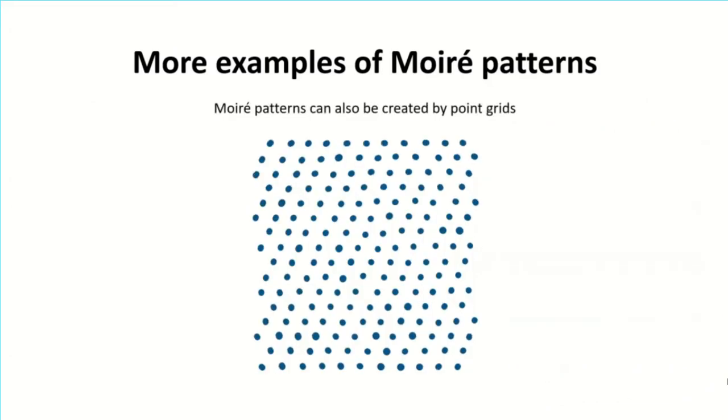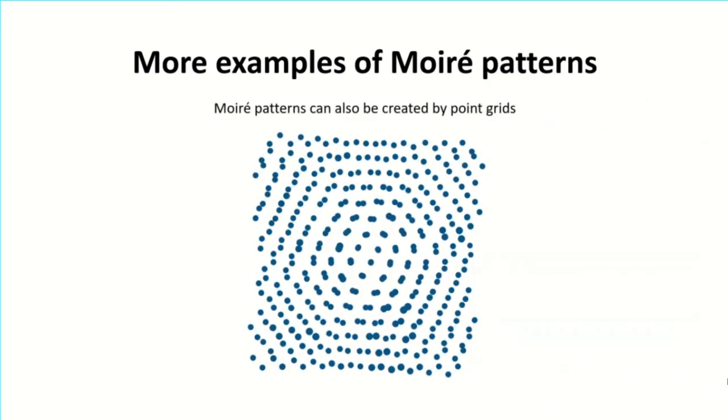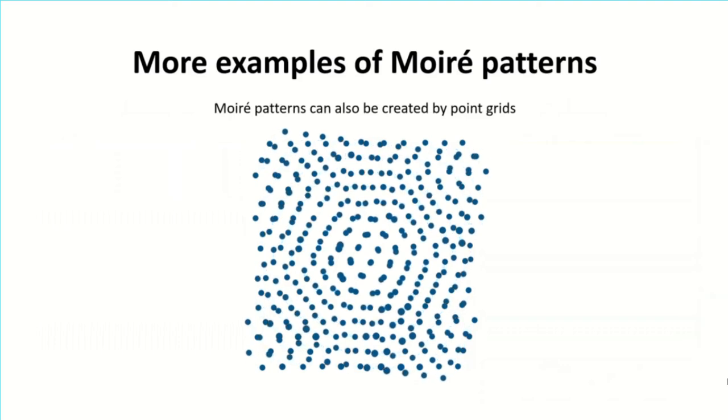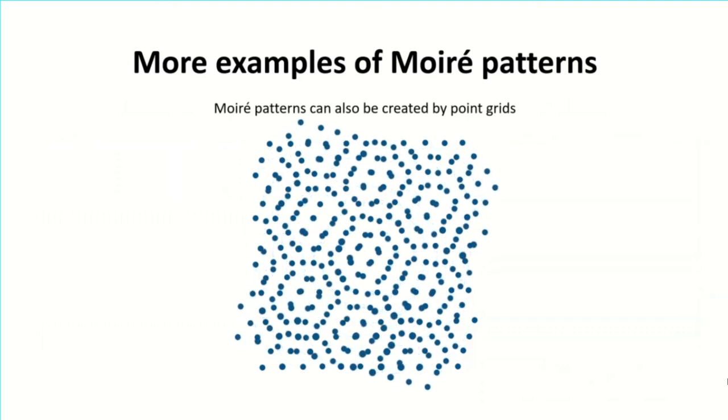And just like the set of lines creating moiré, repetitive points can also create moiré patterns. We call these repeating features to be periodic in nature.